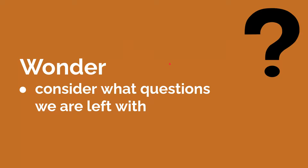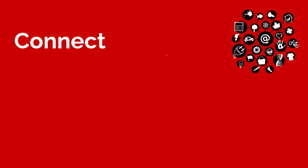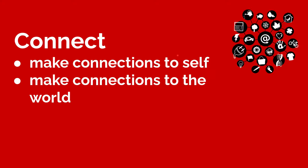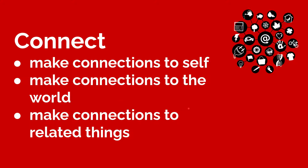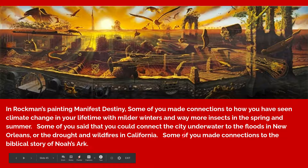'Wonder' — consider what questions you're left with or what questions remain unanswered. In the painting 'Manifest Destiny,' some of you wondered if it was global warming that caused the city to be submerged underwater; some wondered if Rockman was trying to warn us about how ignoring climate change could destroy the earth and us. For 'Connect,' some of you made connections to how you've seen climate change in your own lifetime with milder winters and more insects. Some connected the underwater city to the floods in New Orleans or the drought and wildfires in California. Some made connections to the biblical story of Noah's Ark.